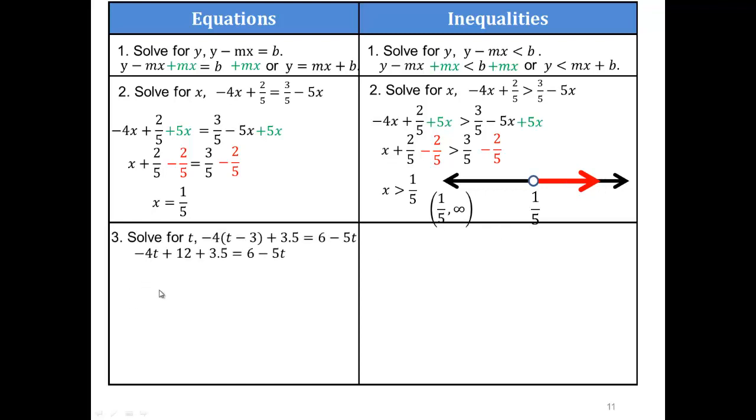Try this one on your own. So first, in order to get the variable, look, here's the variable stuck inside the parentheses. So first, parentheses first. So I'll multiply that out. Negative 4 times t is negative 4t. Negative 4 times negative 3 is positive 12, plus 3 1⁄2 equals 6 minus 5t. So you can rewrite that 12 plus 3.5 is 15.5, equals 6 minus 5t.